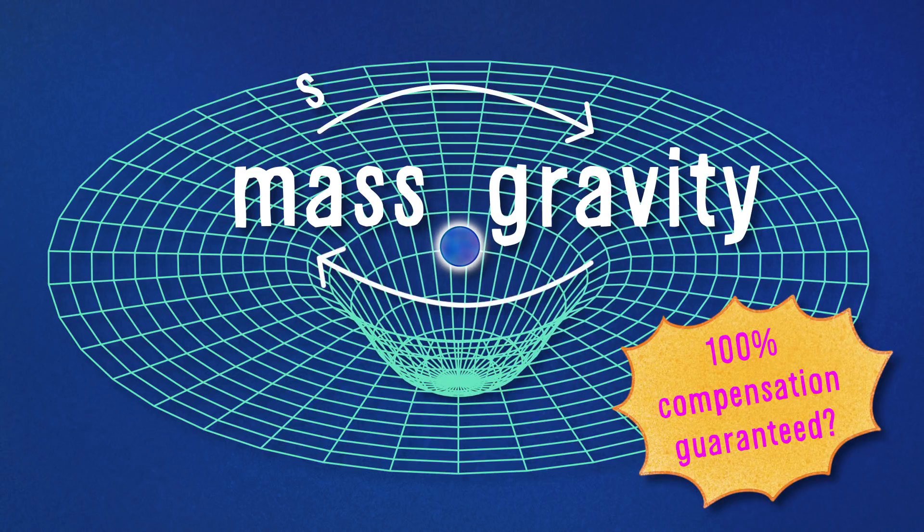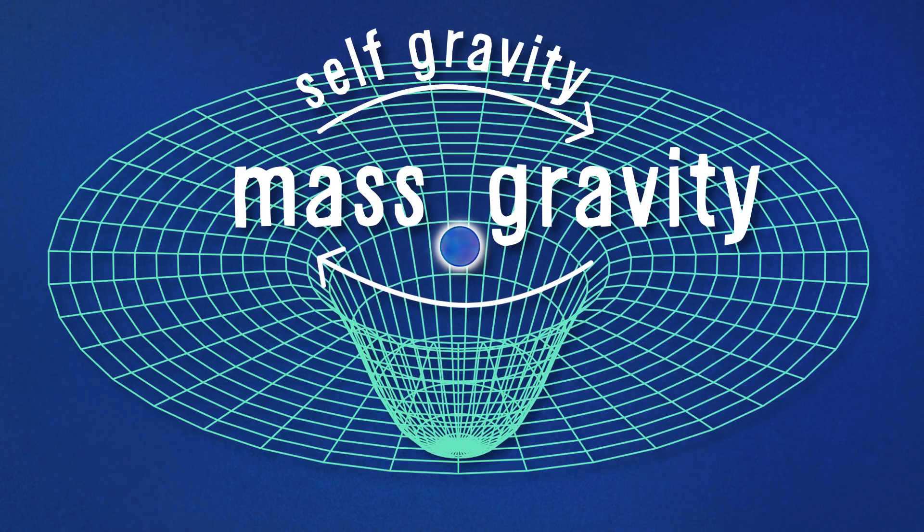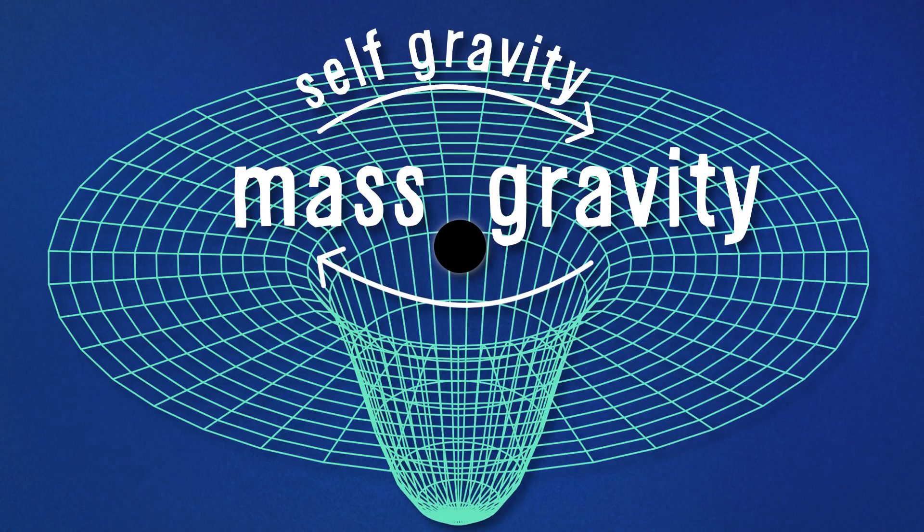This extra self-gravity is noticeable in extremely compact objects like neutron stars or black holes, which warp spacetime strongly. So, we looked at one of those.